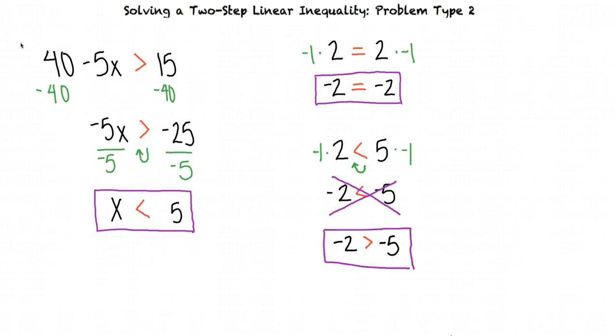I think I get it now. So in solving linear inequalities where the variable has a negative coefficient, we must flip the inequality sign when multiplying or dividing by the negative number. Exactly.